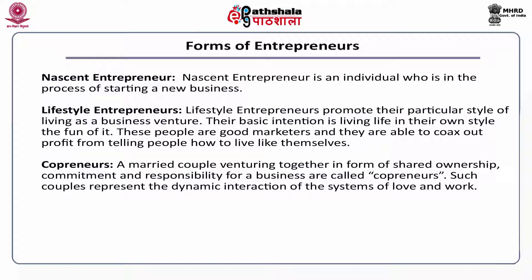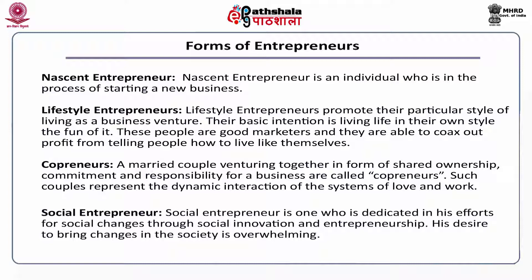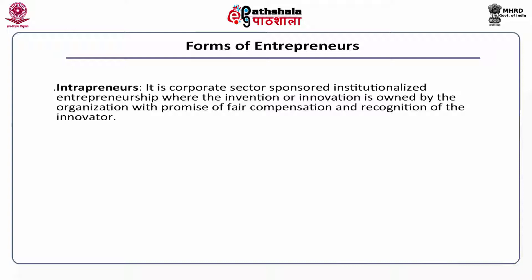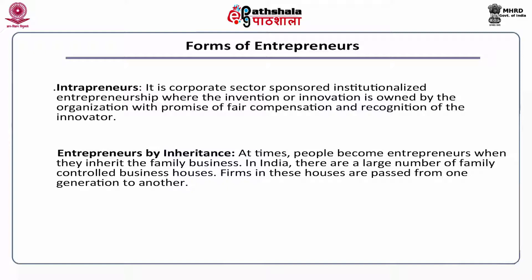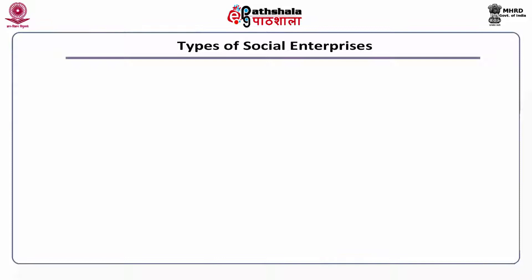Lifestyle entrepreneurs are good marketers and are able to profit from telling people how to live like themselves. Copreneurs are a married couple venturing together in the form of shared ownership, commitment, and responsibility for a business — they represent the dynamic interaction of the systems of love and work. A social entrepreneur is dedicated in effort for social changes through social innovation; their desire is to bring overwhelming changes in society. Intrapreneurs represent corporate-sector-sponsored institutionalized entrepreneurship, where the invention or innovation is owned by the organization with fair compensation and recognition of the innovator. Fifteenth is the entrepreneur by inheritance — people who become entrepreneurs when they inherit the family business. In India, there are a large number of family-controlled business houses where firms are passed from one generation to another.